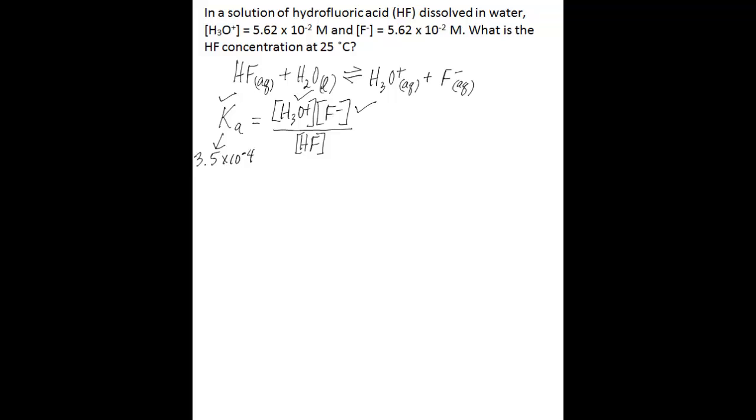So now we know Ka. The only thing we don't know is hydrofluoric acid. So we're going to rearrange our equation so that we can solve for that. And that's easy to do. You say that hydrofluoric acid equals the concentration of hydronium ion times fluoride divided by Ka. Substitute in our knowns.